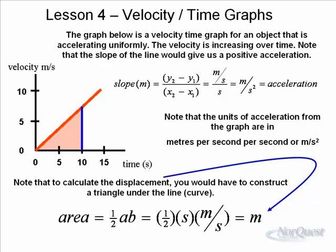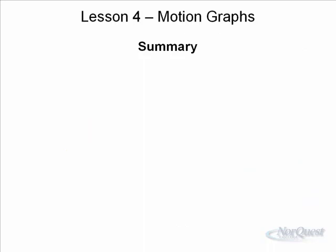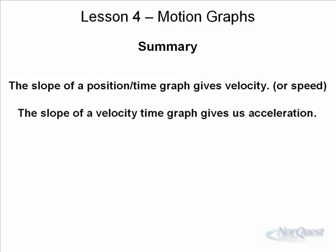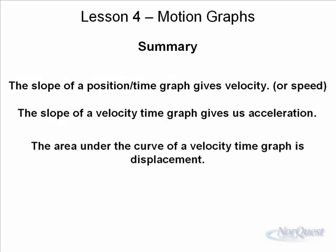To summarize: the slope of a position time graph gives you the velocity, or if you don't have direction, it gives you the speed. The slope of a velocity time graph gives you the acceleration. The area under the curve of a velocity time graph is the displacement. The first one — slope of a position time graph — is certainly used the most, but the other two are also very handy. You will be given opportunities to practice these ideas.